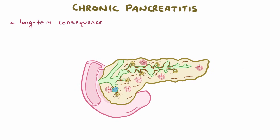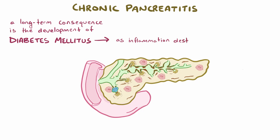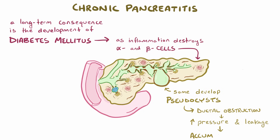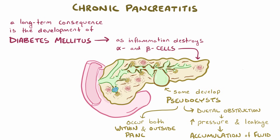A long-term consequence of chronic pancreatitis is the development of diabetes mellitus, which happens as the recurrent inflammation begins to damage the alpha and beta cells of the pancreas. In addition, some individuals develop pancreatic pseudocysts, which in the context of chronic pancreatitis is often the result of ductal obstruction, which increases pressure, induces leakage, and results in accumulation of parapancreatic fluid in fibrous granulation tissue, either within or just outside the pancreas.